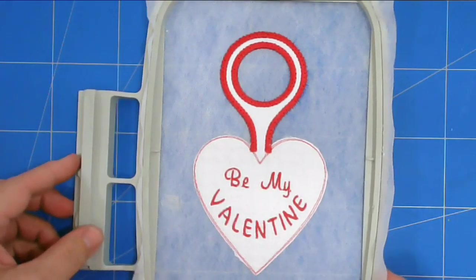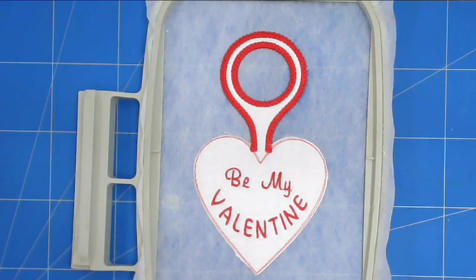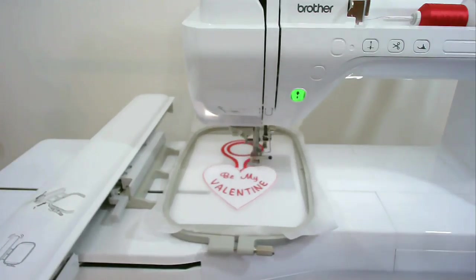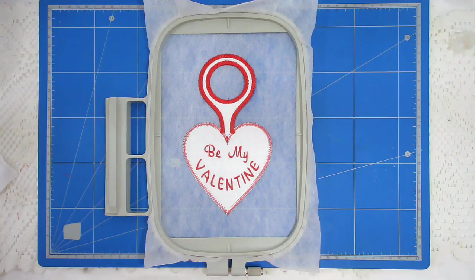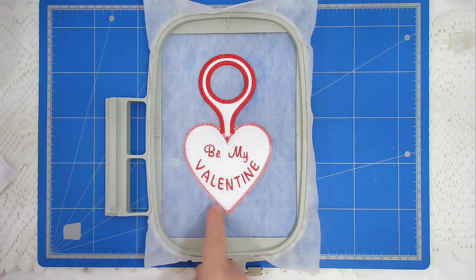Onwards and upwards. Next, I'm going to pop my hoop back into my machine and stitch round number 12, which is going to do the zigzag stitching around the heart. So that's the zigzagging done. I'm going to pop this back into my machine and stitch round number 13, which is going to do the satin stitch decorative edge all around the heart.